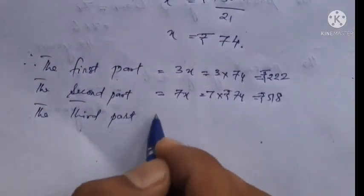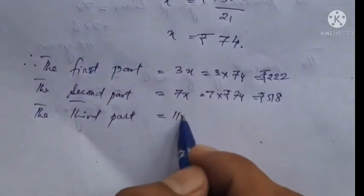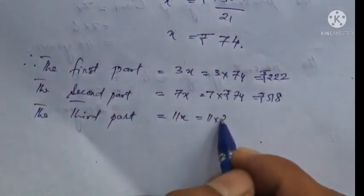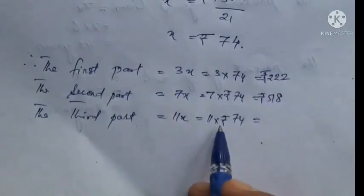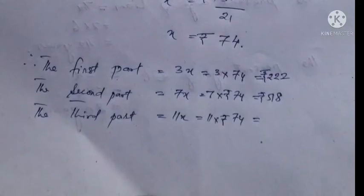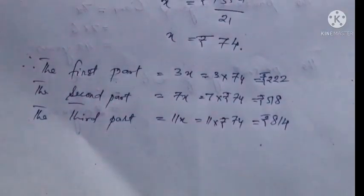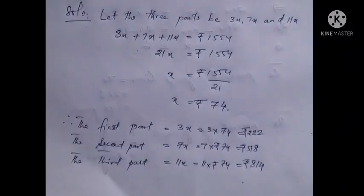The third part is 11x, which is 11 times 74. This gives 814 rupees. These are the three parts.